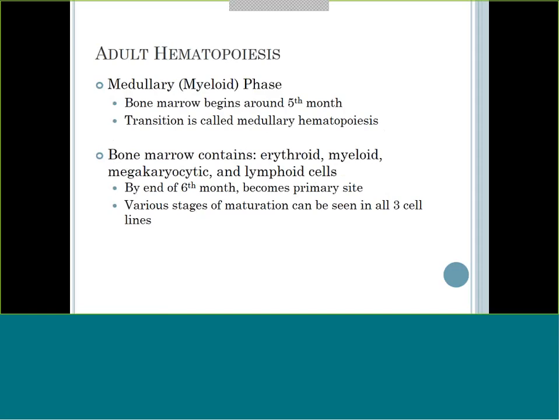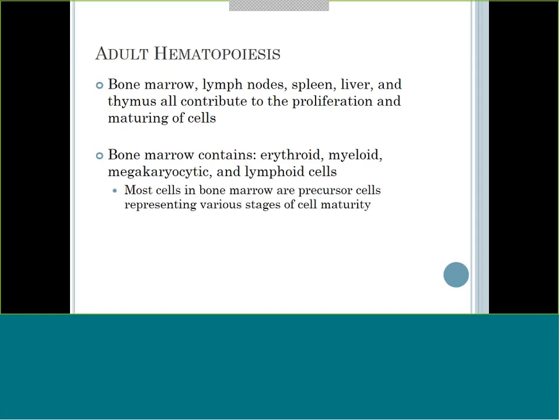For adult hematopoiesis, bone marrow, lymph nodes, spleen, liver, and thymus all help with proliferation and maturing of cells. But the bone marrow is the primary spot - that is where you're making your red cells (erythroid), your myeloid cells which are some white blood cells, your megakaryocytic line which is platelets, and your lymphoid cells which are other types of white cells.